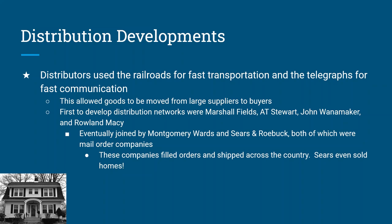While they don't exist very much anymore today, they started as railroad distribution companies and then became brick-and-mortar department stores. Montgomery Wards became a mail order company. Sears and Roebuck started as a mail order company, and they both technically still exist today. These companies would order homes, clothes, goods and services, and ship them across the country using the railroads. The picture there is a home kit — Sears used to sell homes, the materials would arrive on a train, and the homeowner would build their own home.